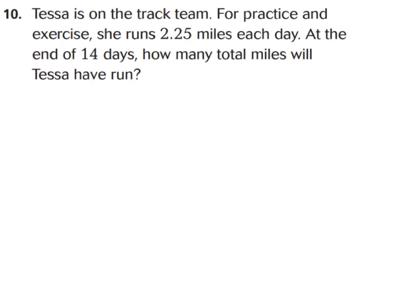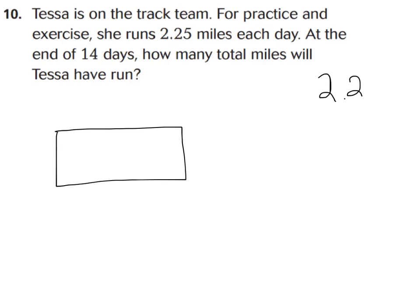For problem solving at the bottom, let's do number 10. It says: Tessa is on the track team. For practice and exercise, she runs 2 and 25 hundredths miles each day. At the end of 14 days, how many total miles will she have run? The word 'each' is our clue word to multiply, and we're looking for a total number at the end of 14 days. So I know I'm looking for a big answer, which is why I'll multiply. You can use the box method or the traditional method — just make sure you put your decimal point in the right spot.